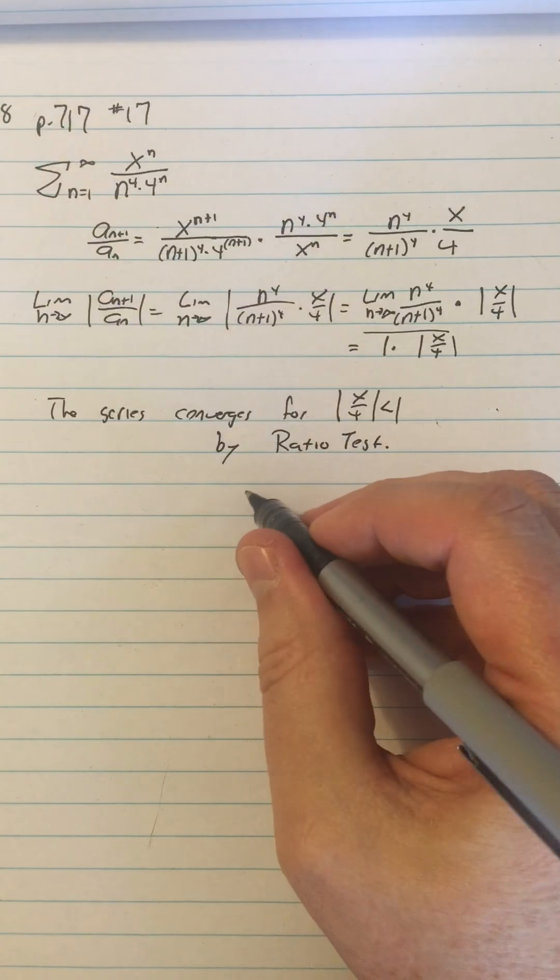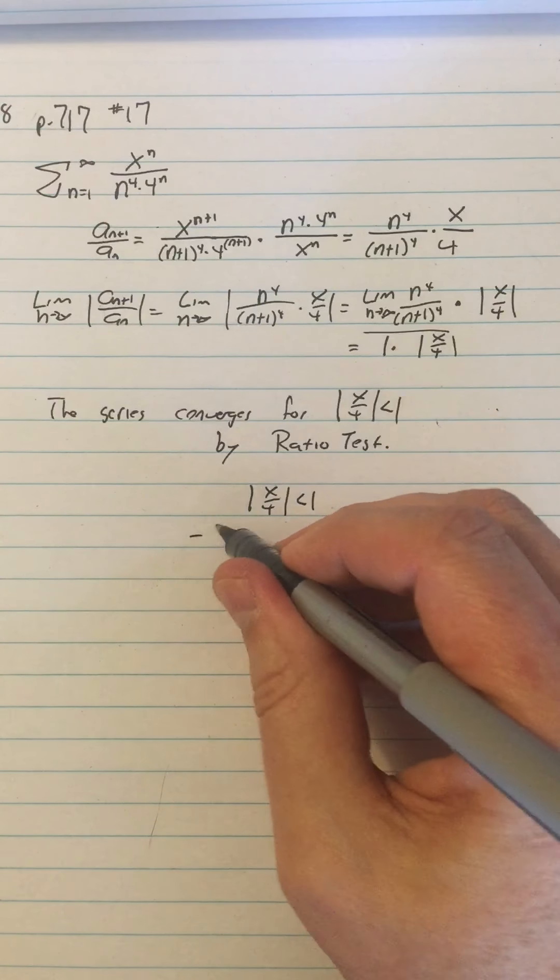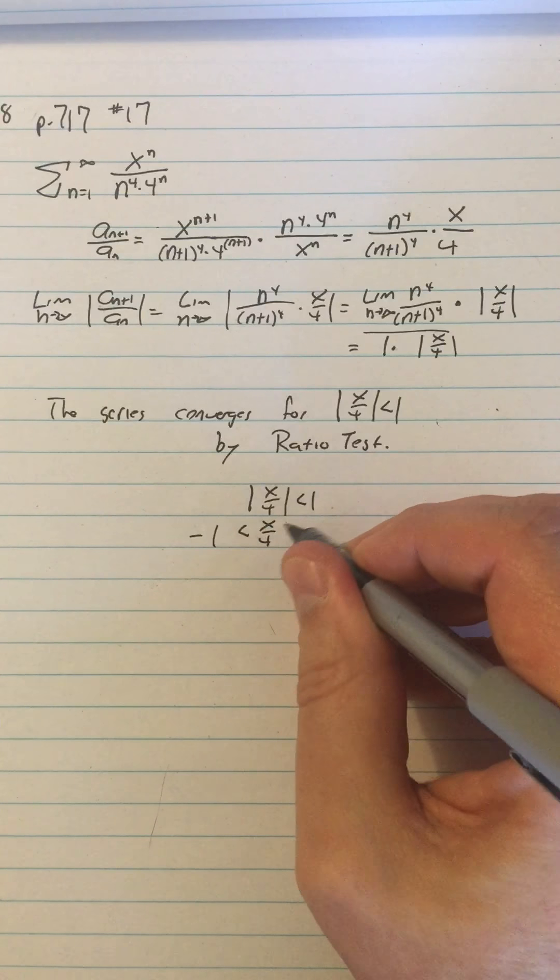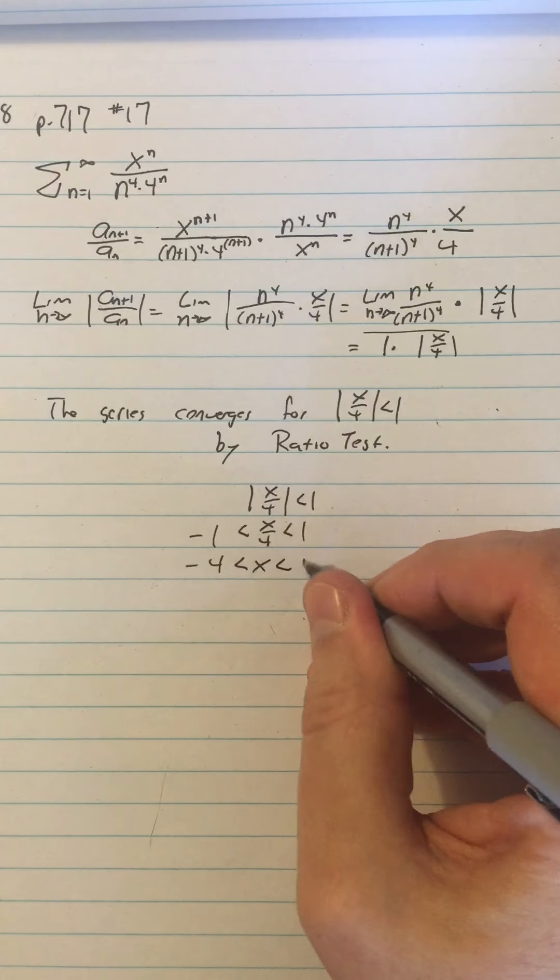Then I just solve this inequality: absolute value of x over 4 less than 1. So negative 1 is less than x over 4 is less than 1. Multiplying by 4, negative 4 is less than x is less than 4.